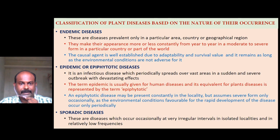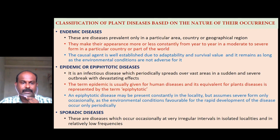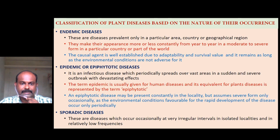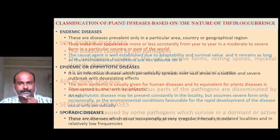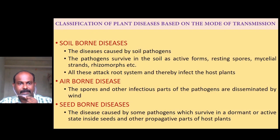Epidemic diseases, or epiphytotic diseases, are infectious diseases which periodically spread over vast areas in a sudden and severe outbreak with devastating effects. The term epidemic is used for human diseases; its equivalent for plant diseases is epiphytotic. An epiphytotic disease may be present constantly in the locality but assumes severe form only occasionally when environmental conditions become favorable. Sporadic diseases occur occasionally at very irregular intervals in isolated localities and at relatively low frequencies.